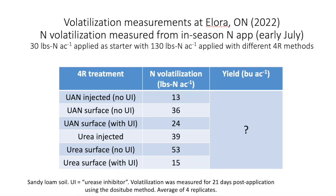At the Allura site in 2022 — with yield data still pending as of August — volatilization data is already available. The soil pH here is 7 to 7.5, and volatilization losses are much higher than either Ridgetown or Winchester in 2021, which is likely a pH effect. Without inhibitors, surface-applied nitrogen showed very high losses, and it would be very surprising if that does not translate into lower yields in the treatments that didn't receive inhibitors.